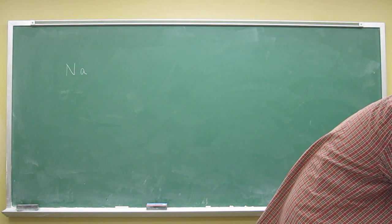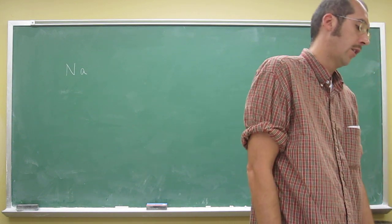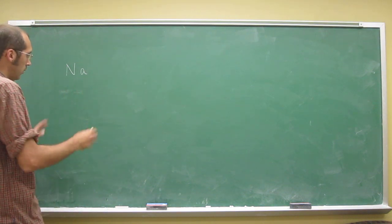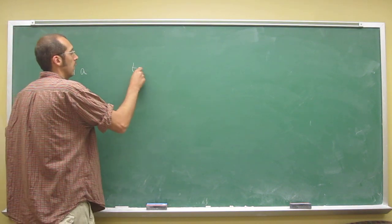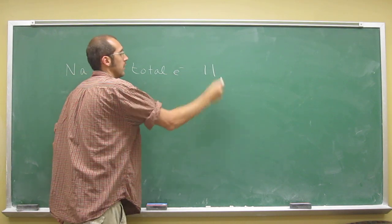two, helium three, four, five, six, seven, eight, nine, ten, and then sodium is number 11. So sodium has a total number of electrons is 11.